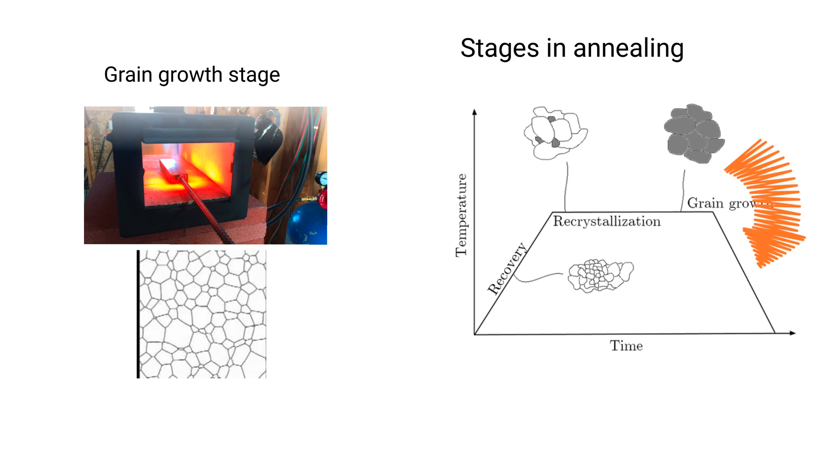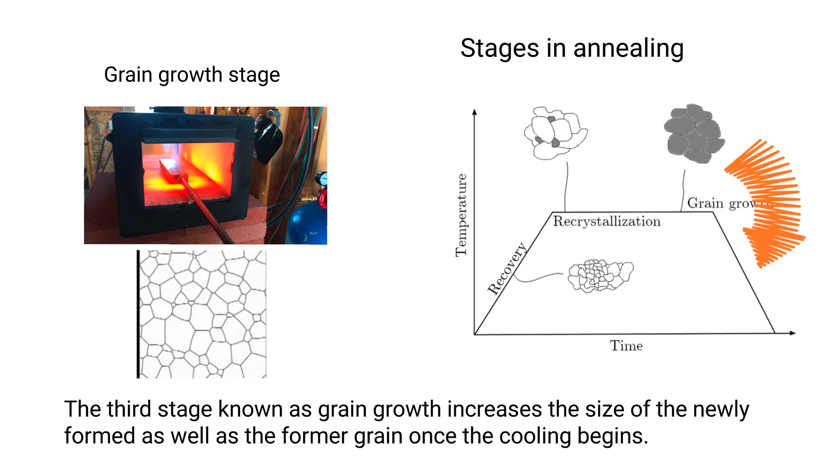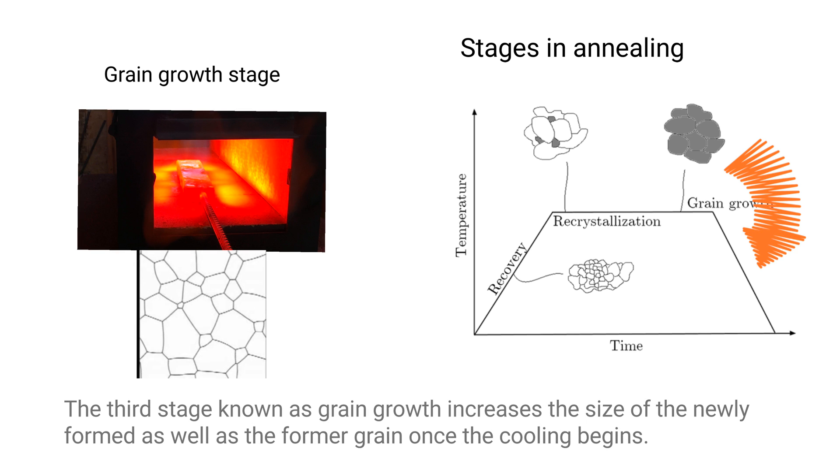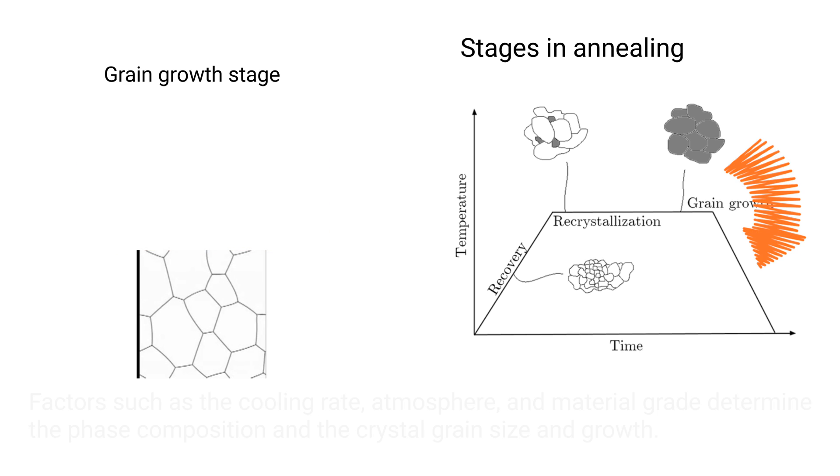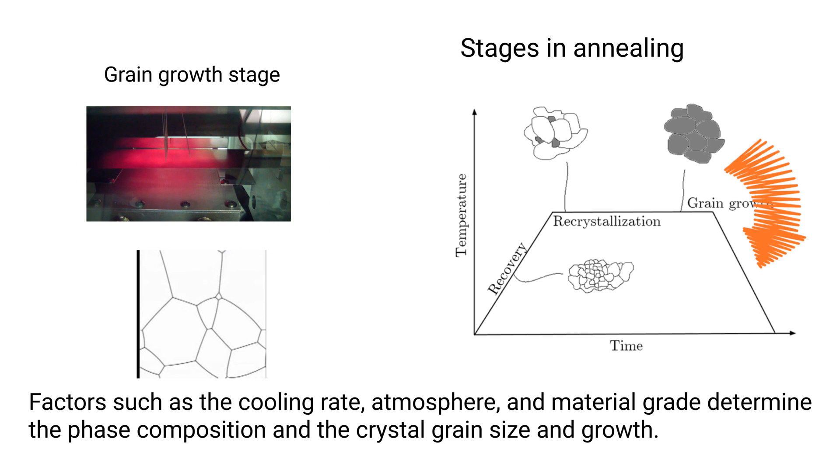Grain growth stage. The third stage, known as grain growth, increases the size of the newly formed as well as the former grains once the cooling begins. Cooling the material at a specific rate causes new grains to develop. Factors such as the cooling rate, atmosphere, and material grade determine the phase composition and the crystal grain size and growth.